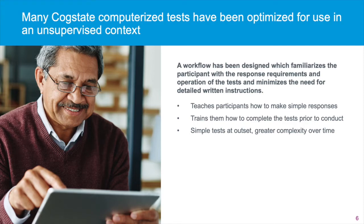Within the modular CogState computerized cognitive test platform, several of the tests have been optimized for use in unsupervised contexts. A workflow has been designed which familiarizes the participant with the response requirements and operation of the tests, and minimizes the need for detailed written instructions. This supports conduct by teaching participants how to make simple responses, showing them how to complete the tests prior to their conduct, and structuring the battery with simple tests at the outset and greater complexity over time. Automated processes can also prompt test repeats where data are incomplete or where performance indicates incorrect test understanding.